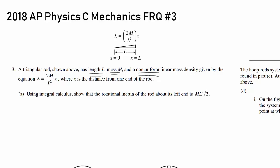Why can't it be uniform? The linear mass density is given by the equation lambda equals 2M over L squared times X, where X is the distance from one end of the rod. They want us to use integral calculus to show that the rotational inertia of the rod about its left end is ML squared over 2.